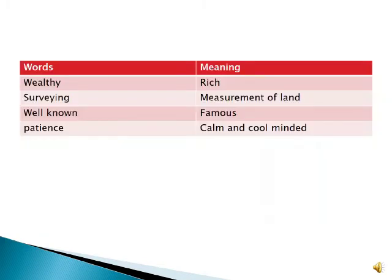Now these are some of the difficult words. While I was reading I told you some meanings, but for your easiness I am repeating them again. Look at the word meanings: 'wealthy' means rich; 'surveying' means measurement of land; 'well known' means famous; 'patience' means calm and cool minded.